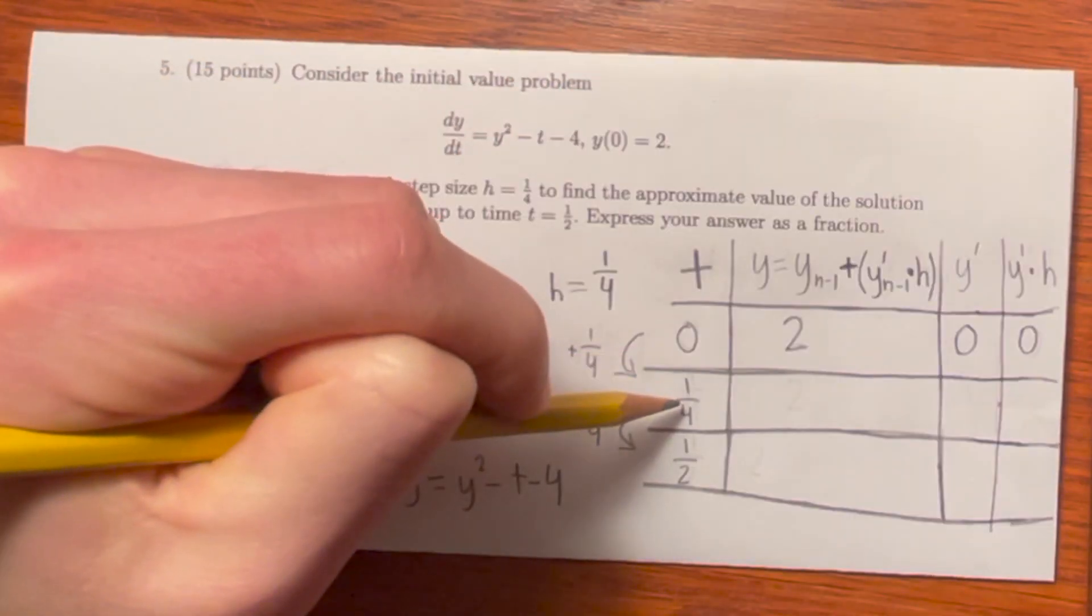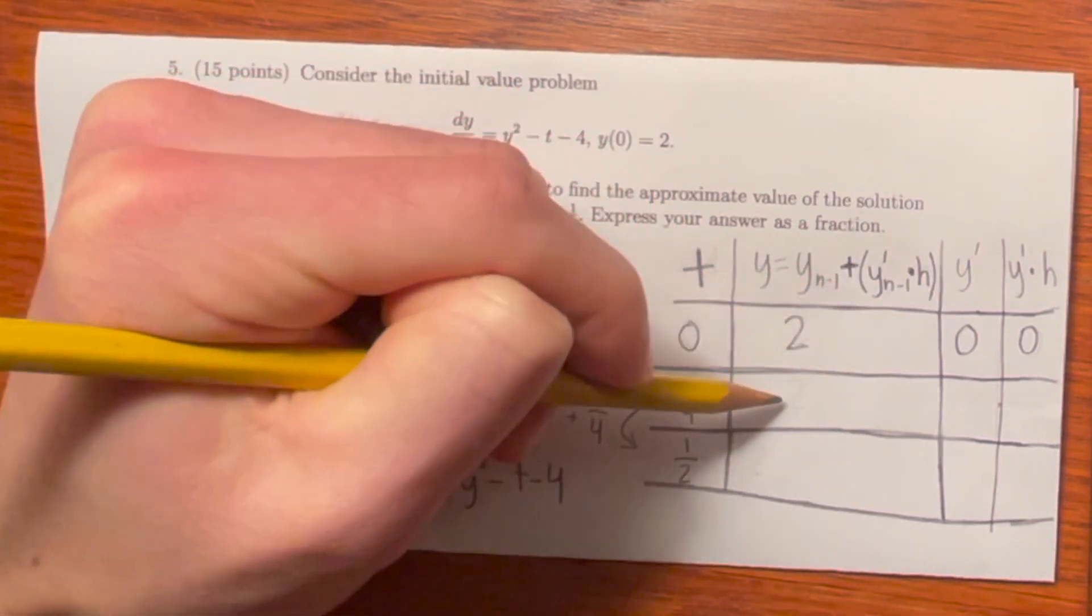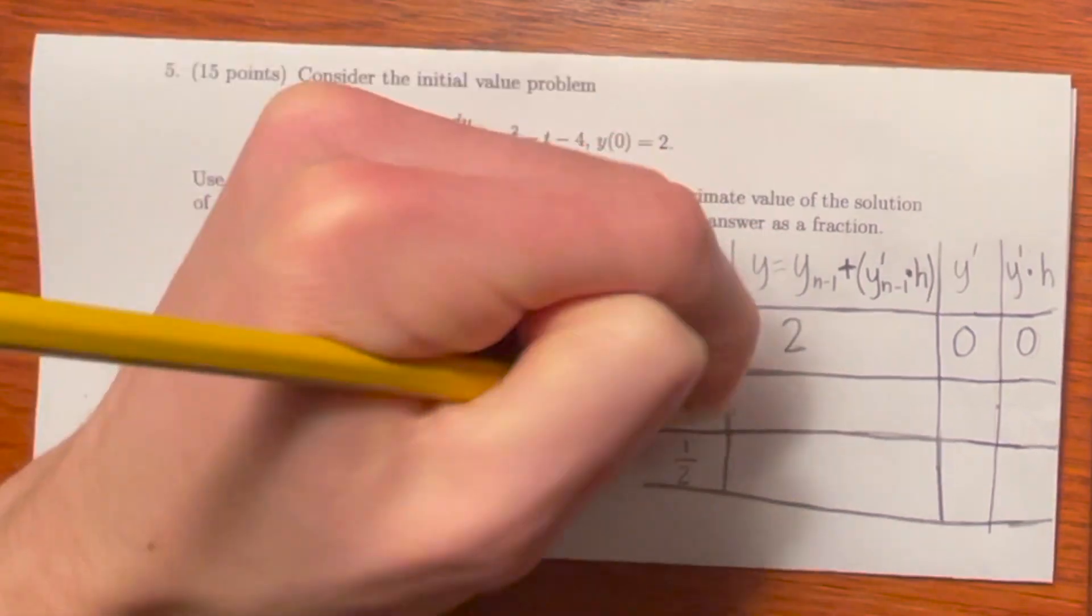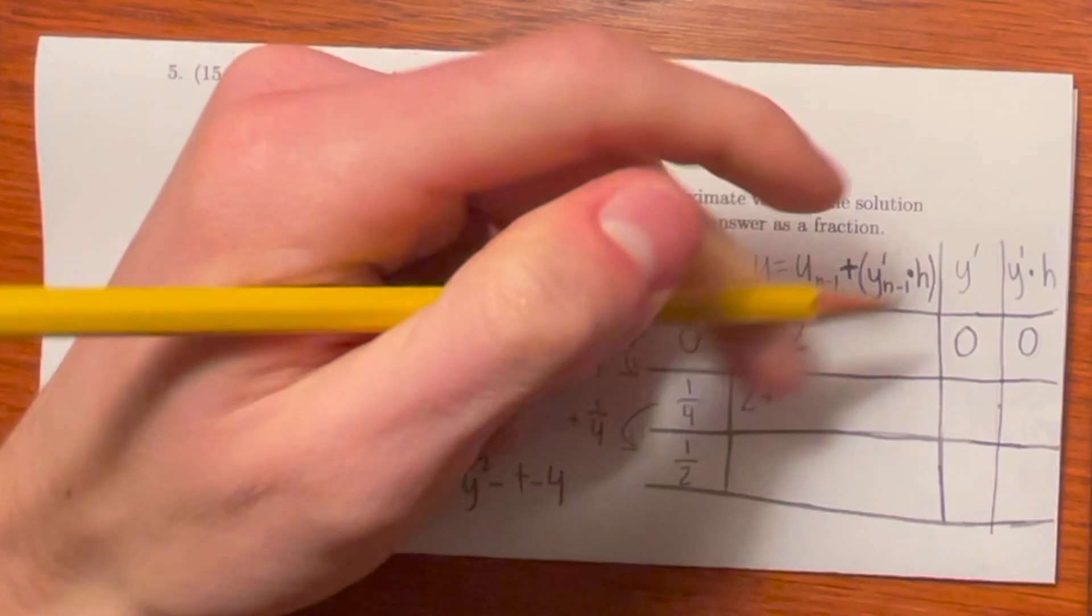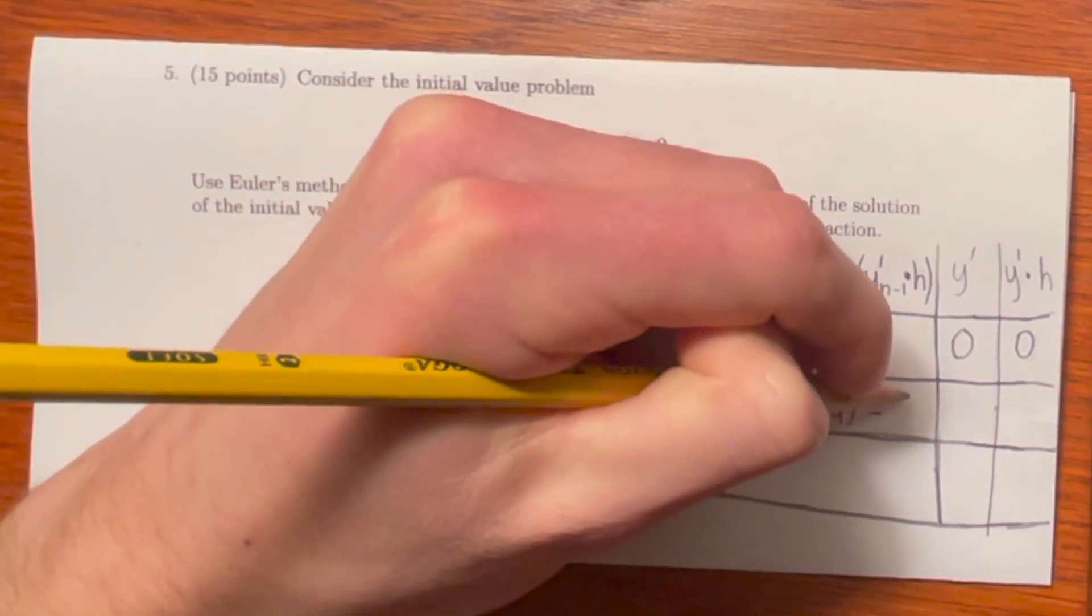The y for t equals 1 fourth will be calculated using this equation. y of n minus 1, meaning the y before it. So we know the y before it is this one right here, 2, plus y prime of n minus 1, that's the y prime before it, 0, times h, which is 1 fourth still. So this still equals 2.